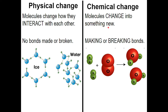In contrast, chemical change is when molecules or atoms change into something new. So either atoms change into molecules, molecules change to atoms, or a molecule changes into a different kind of molecule. But importantly, it's making or breaking bonds — that's the chemical change.